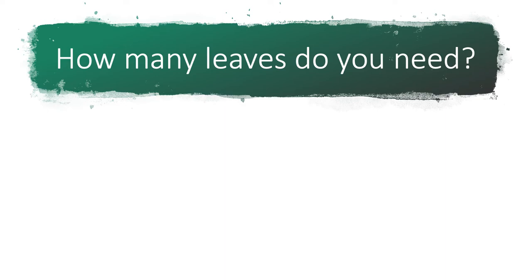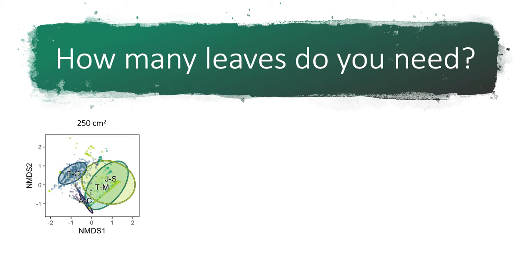Another tool we can use to evaluate whether we've examined enough leaves is non-metric multidimensional scaling (NMDS). What NMDS does is treat every broad category of insect feeding as a dimension, then decompose that into only two dimensions so we can visualize how patterns of insect feeding diversity compare across different plants or fossil plant localities.